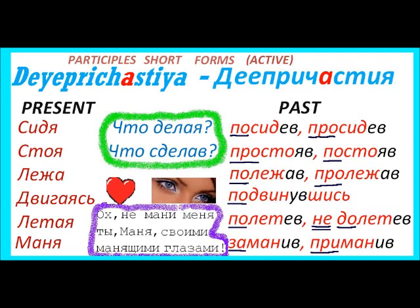So this Деепричастие — we have present forms and we have past forms, and I'm showing you like that so you could see similarities in them. All of these Деепричастие — short participles, short forms of participles — all of them are answering questions: ЧТО ДЕЛАЯ? and this question you see in the middle of the slide in bright green color, framed — ЧТО ДЕЛАЯ? ЧТО СДЕЛАВ?